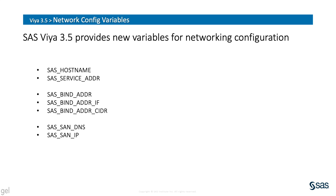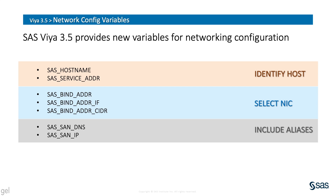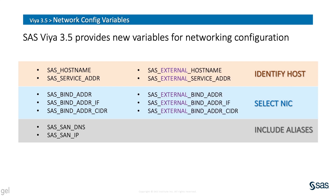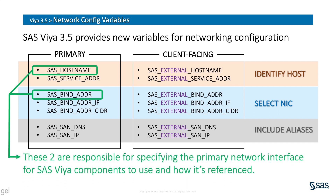To handle all of these network complexities, SAS Viya 3.5 provides several network configuration parameters. The first two are used by Viya to identify the host — useful when it advertises Viya services and registers them in the SAS configuration server for discovery. The next set of bind variables direct the Viya software as to which network interface to use for communicating. The last two variables are useful to provide subject alternative names to be added to the TLS encryption certificates when Viya services might be reached using names or IP addresses unknown to Viya. There's also another entire set of these variables for Viya services contacted from external sources like clients. The primary set of variables tell Viya how to communicate on the network, and the client-facing external variables are optional. Of the primary variables, two in particular drive the whole shebang: SAS_HOSTNAME and SAS_BIND_ADDR are key to how Viya determines its network connectivity.